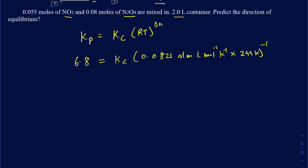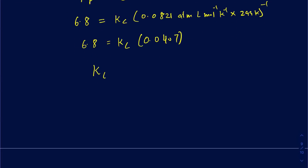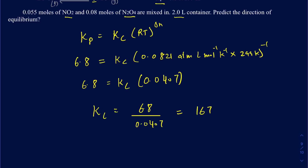So we do the math and figure out what Kc is going to be. It's 6.8 equals Kc times (0.0821 × 299) to the power of negative 1, which comes out to 0.0407. So your Kc in this particular case is going to be equal to 6.8 divided by 0.0407, which comes out to 167 as your Kc value. Now I can go back and figure out what the Qc is going to be, and then compare this Qc with the Kc of 167.